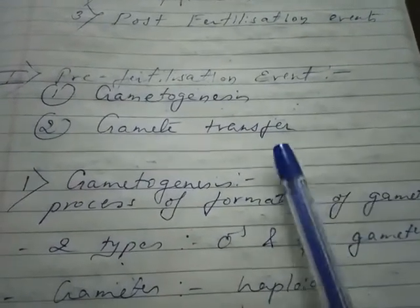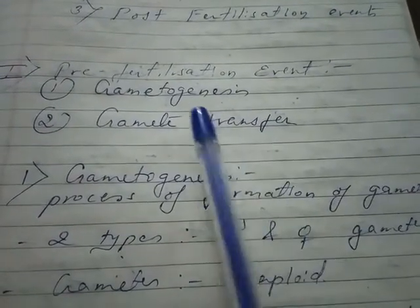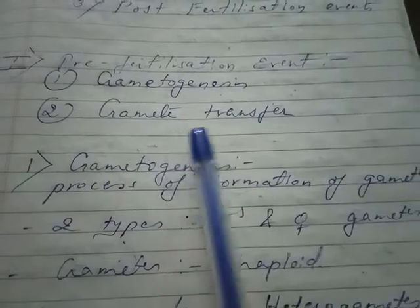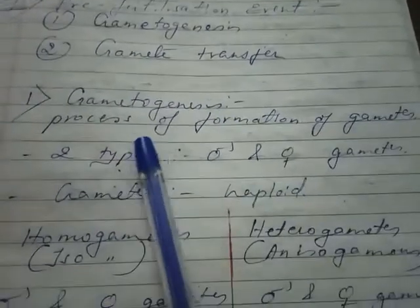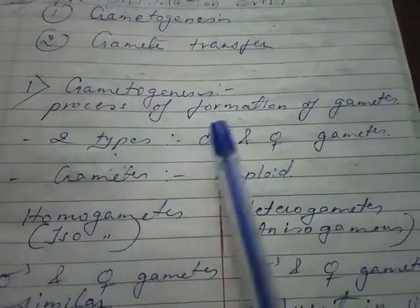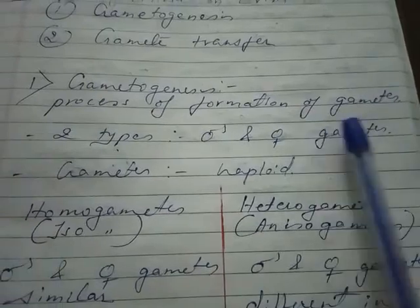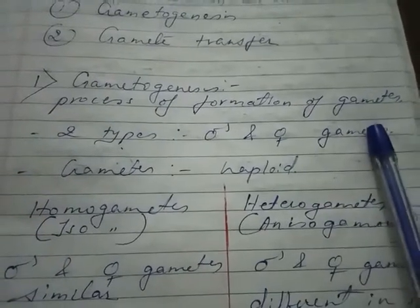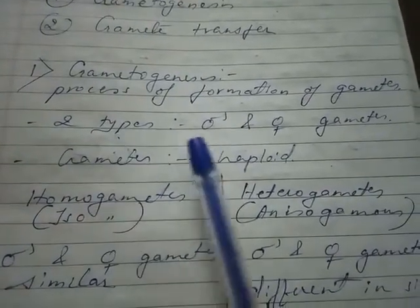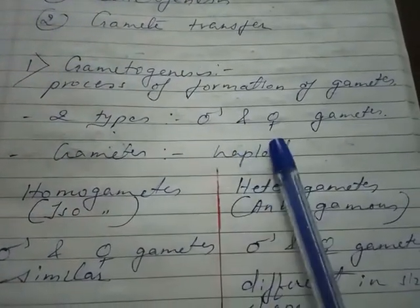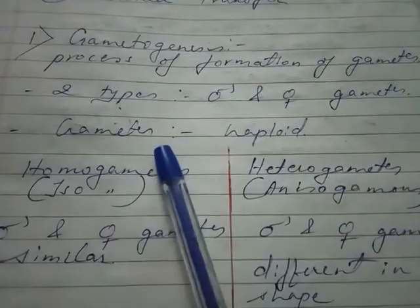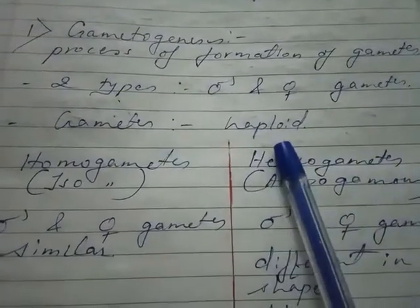The pre-fertilization event has two stages: gametogenesis and gamete transfer. Gametogenesis is the process of formation of gametes. Gametes are of two types — male and female gametes. Gametes are haploid.